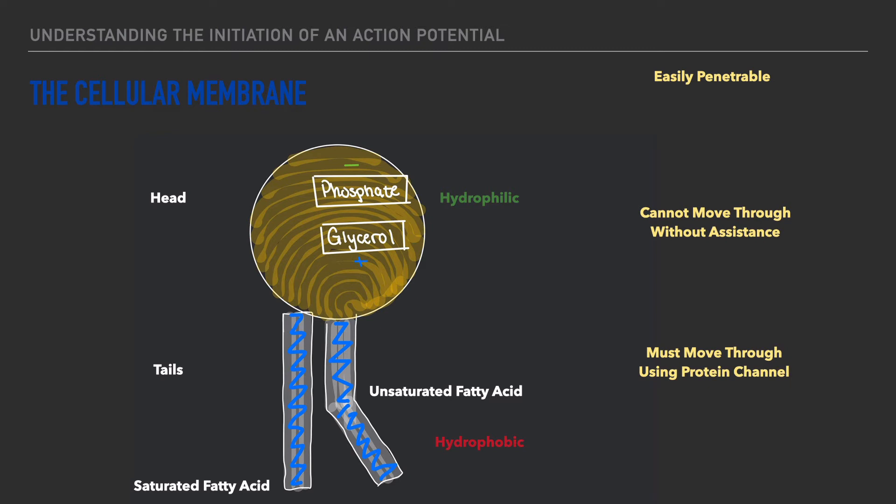Now for the components that can move through the cell easily these substances are called or are referred to as being lipid soluble and this includes things such as oxygen carbon dioxide and vitamins A, D, E, and K.